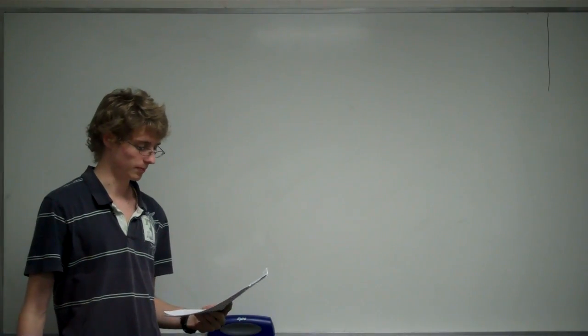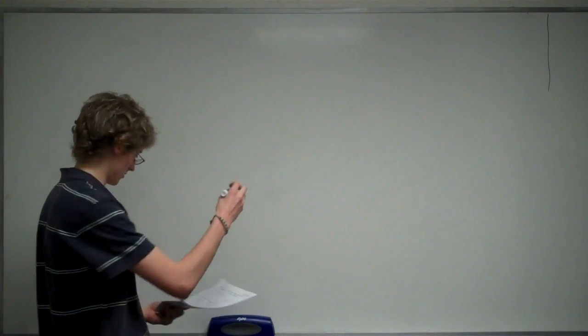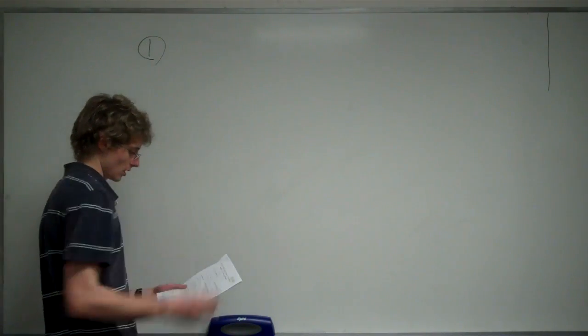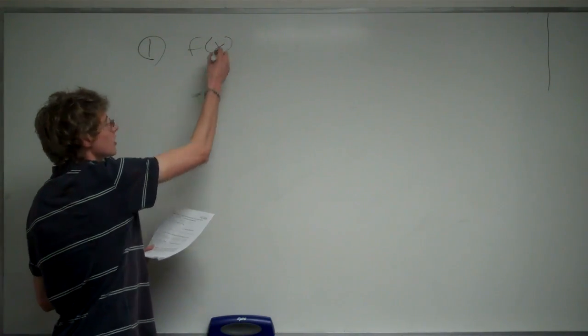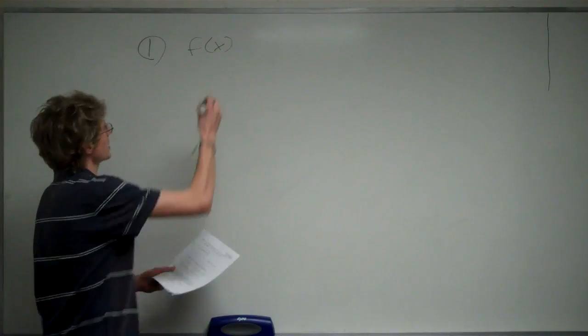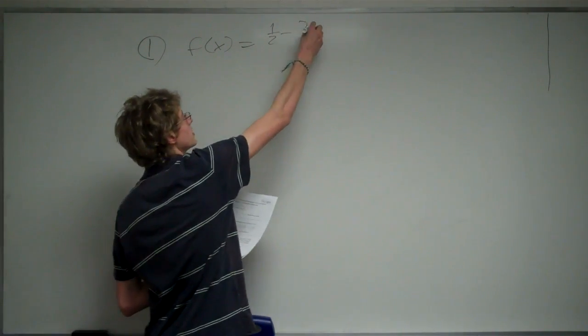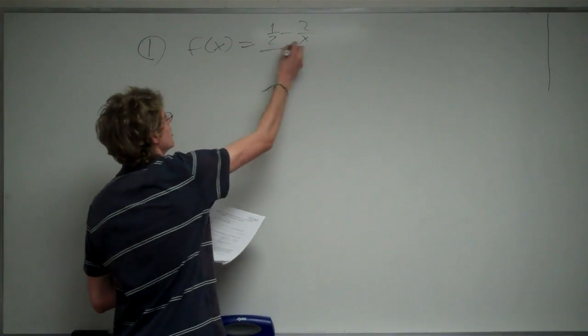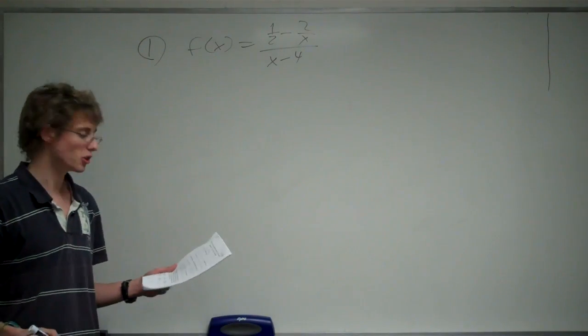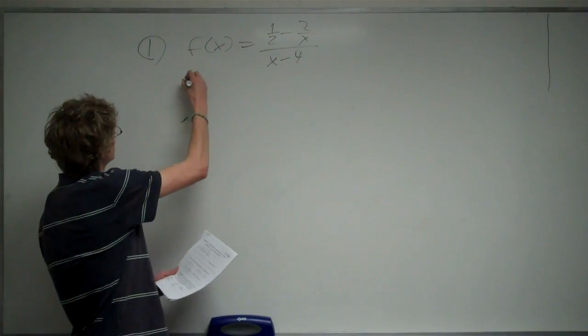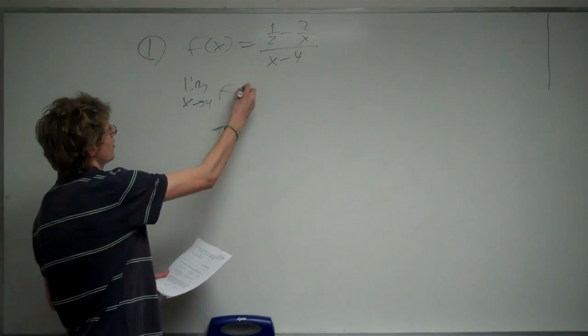This is question 1, part 1 on exam form code A. And the question reads: if f of x equals 1 half minus 2 over x all over x minus 4, evaluate the limit as x approaches 4 of f of x.